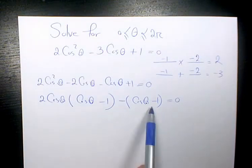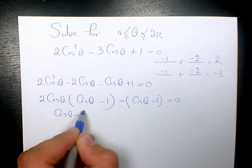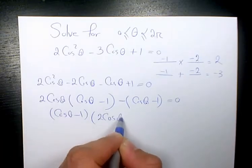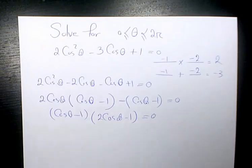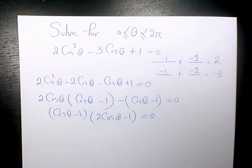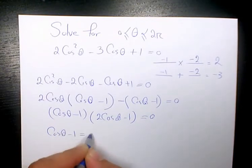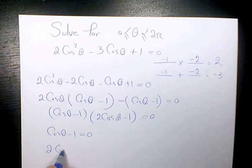So we can factor out cosine theta minus 1, giving us (cosine theta minus 1)(2 cosine theta minus 1) equals 0. Since we have the product of two expressions equal to 0, one of them must be 0. So either cosine theta minus 1 equals 0, or 2 cosine theta minus 1 equals 0.